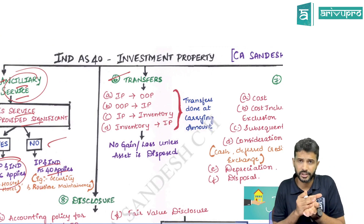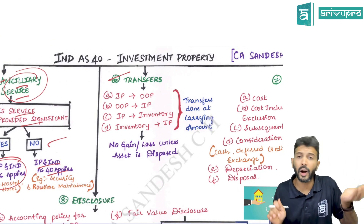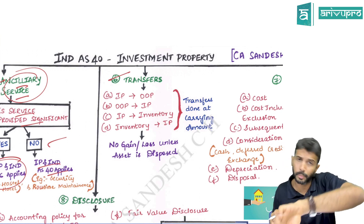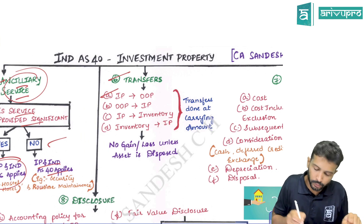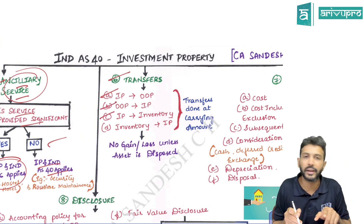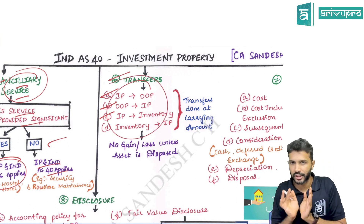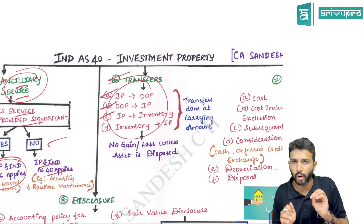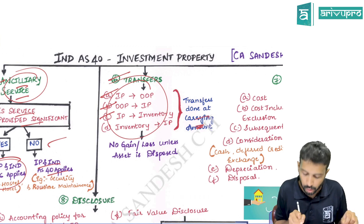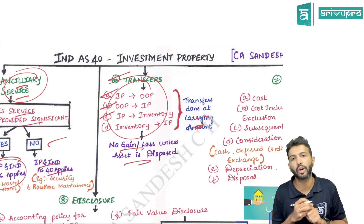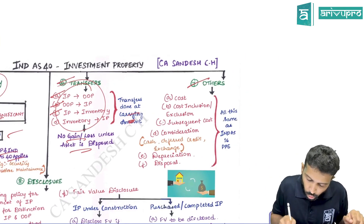Regarding transfers: if your intention changes — for example, earlier your intention was to let it out and earn rental income but now you want to use it for your business purpose — there can be reclassification from IP to OP, or OP to IP, or IP to inventory, or inventory to IP. For any such reclassification, use only the carrying amount. Do not book any gain or loss on this reclassification.